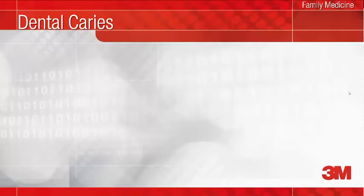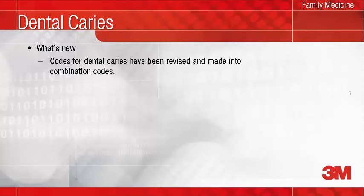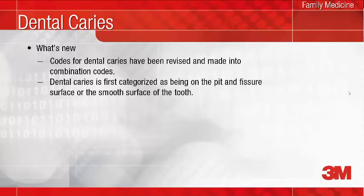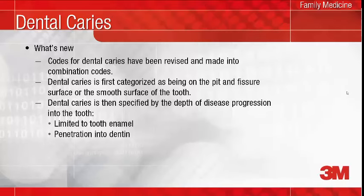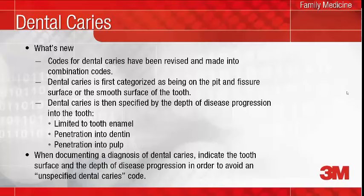What's new with the codes for dental caries in ICD-10 is that they have been turned into combination codes. Dental caries is first categorized as being on the pit and fissure surface of the tooth or the smooth surface of the tooth. It is then further specified by the depth of disease progression into the tooth, either being limited to the enamel, penetrating into the dentin, or penetrating into the pulp. So next time you are documenting a diagnosis of dental caries, please indicate the tooth surface and the depth of disease progression in order to avoid an unspecified dental caries code. Data on dental caries is collected as part of the National Oral Health Surveillance System, and oral public health initiatives can be designed appropriately when the data collected is accurate and specific.